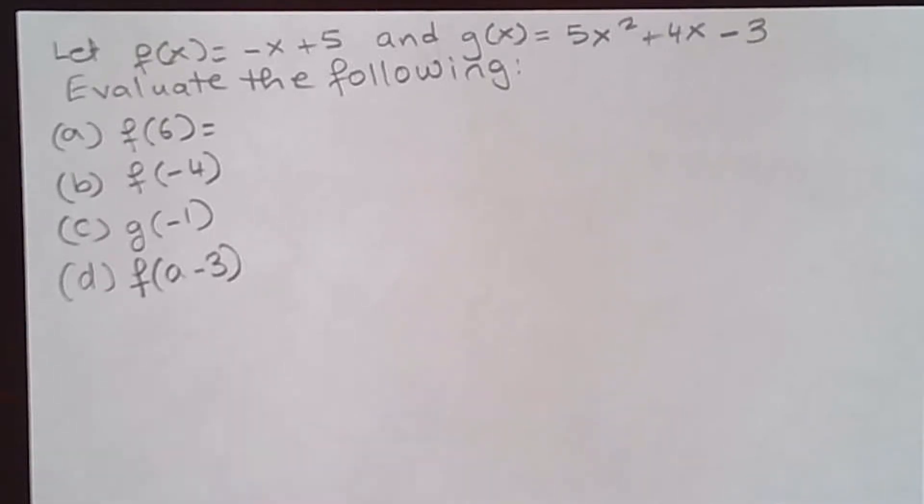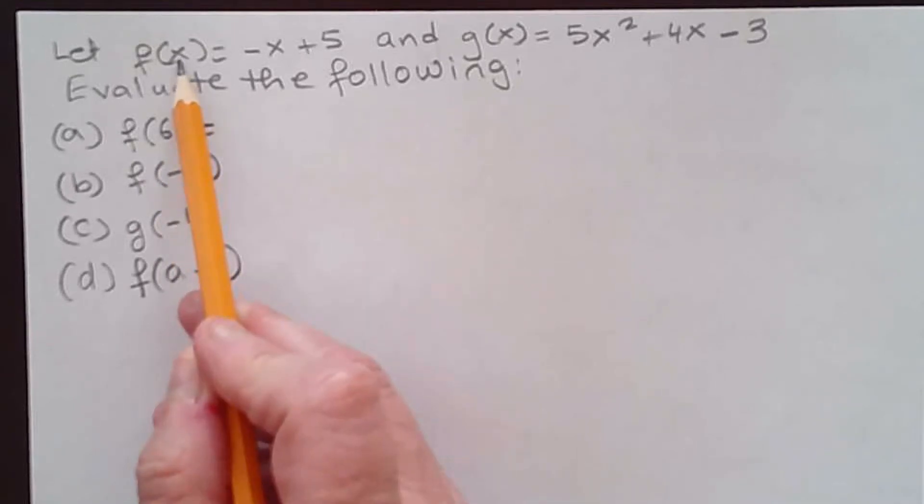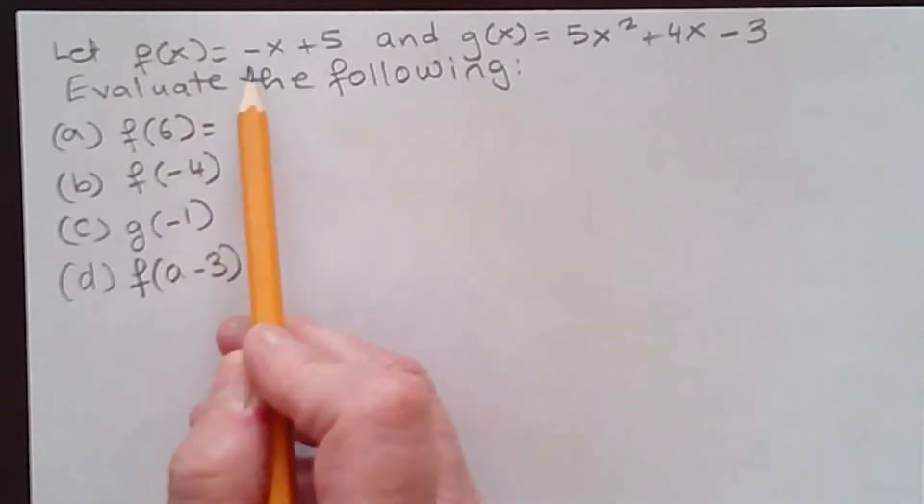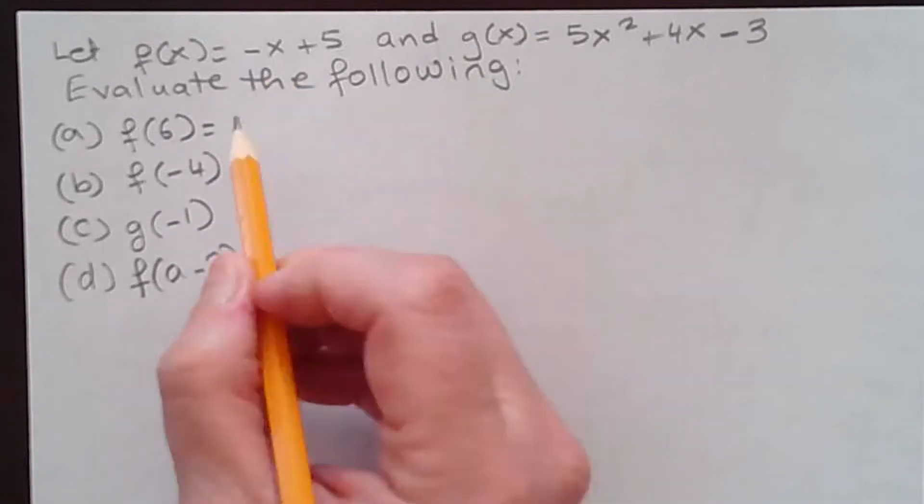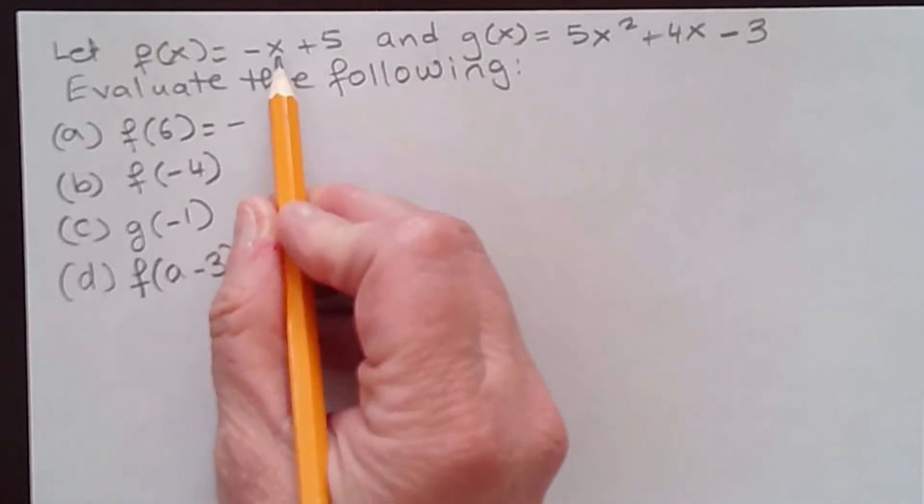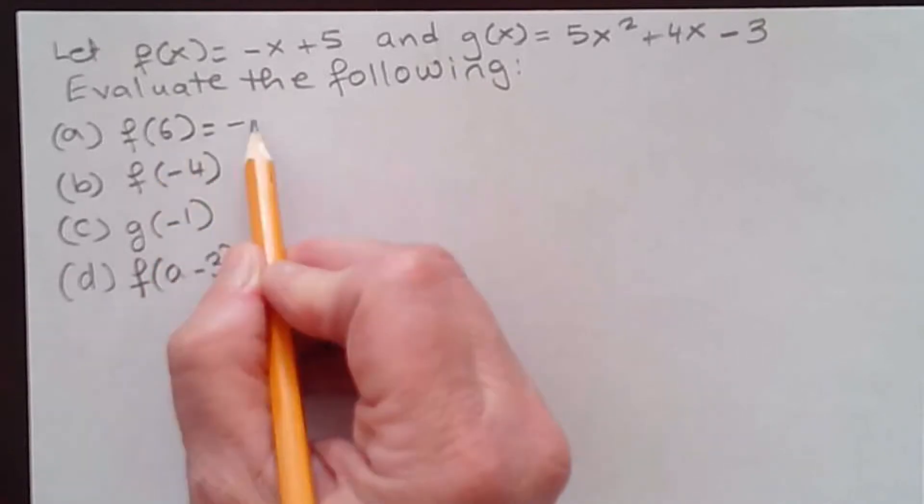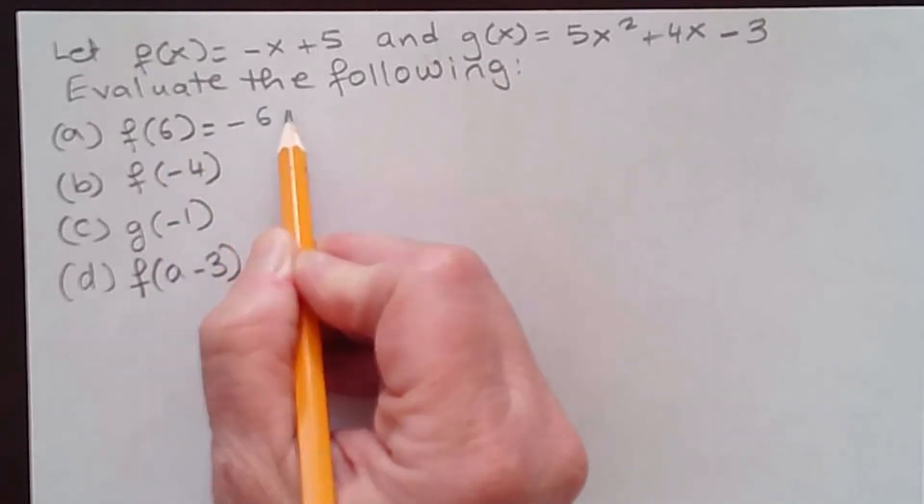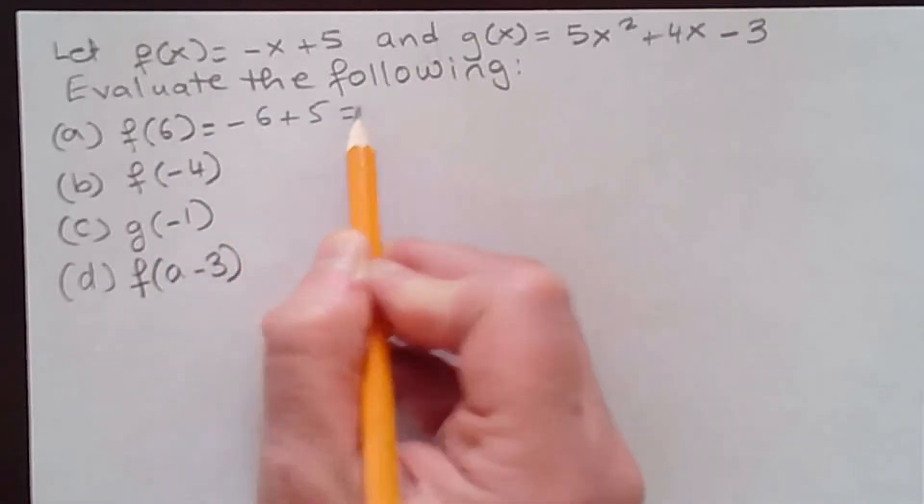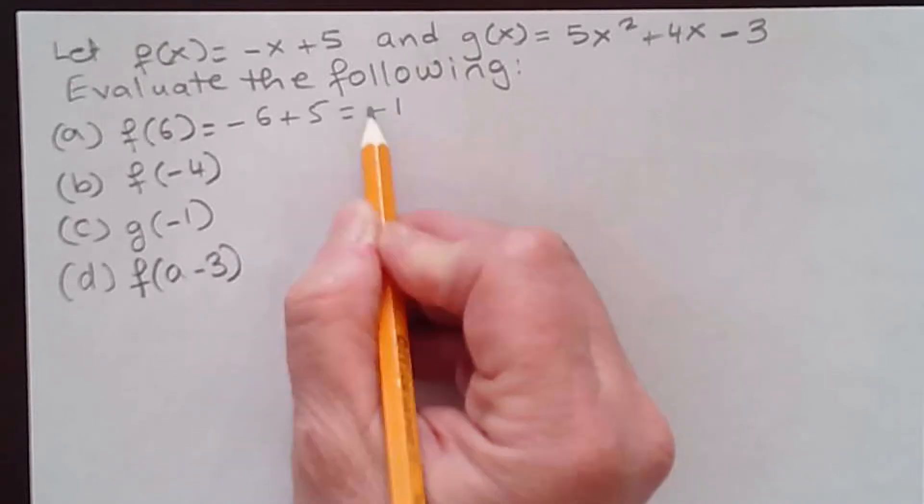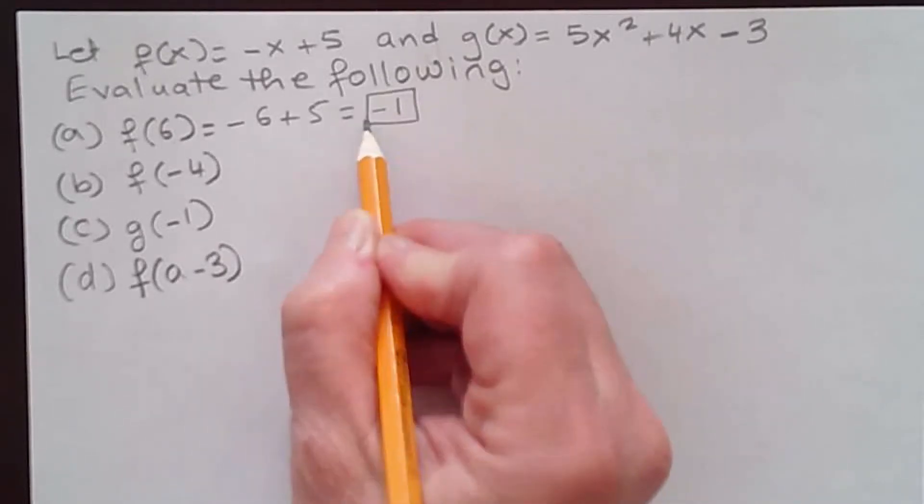Part A, they want us to evaluate f(6). That means we have to replace whatever we see x in the function with 6. f(x) is -x + 5, so we have -6 + 5, which equals -1. That's part A.